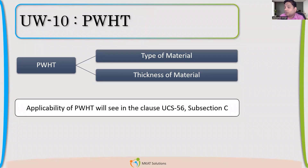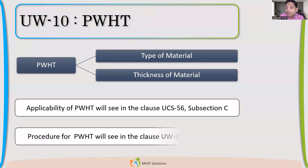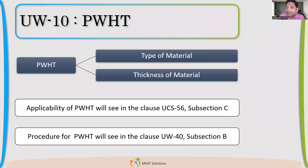So here the code only mentions that UCS-56 is the clause which we should refer. And about the procedure — like what should be my heating rate, cooling rate, and what should be the heat affected zone — all that is given in UW-40. We'll talk about that also in further chapters.